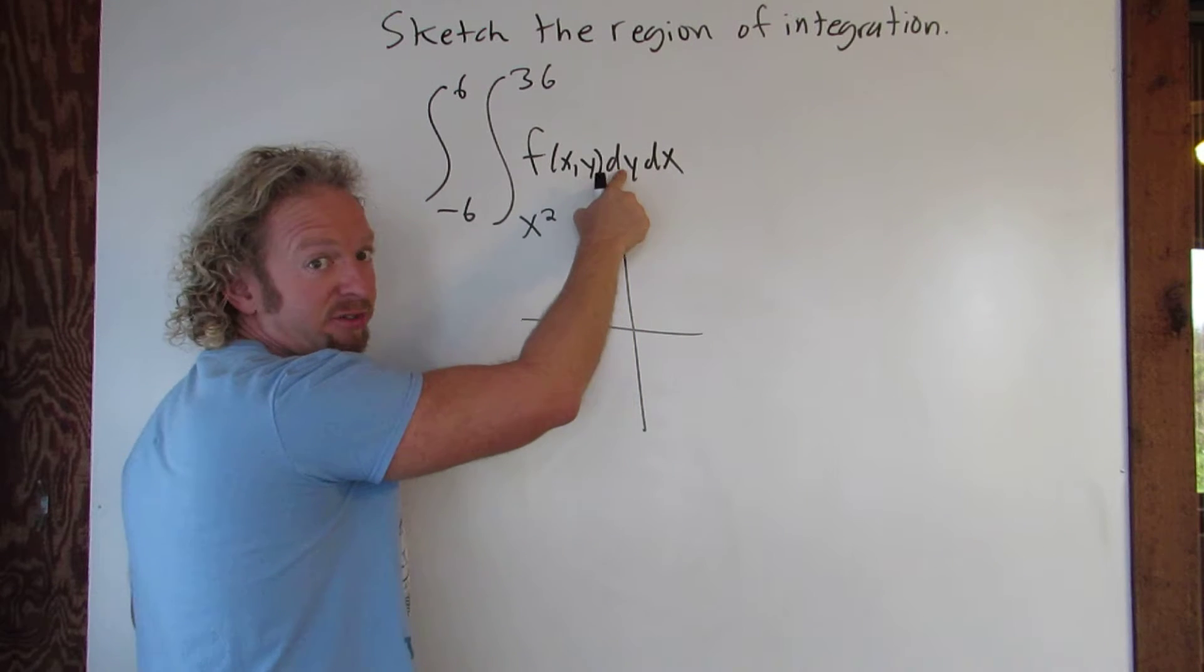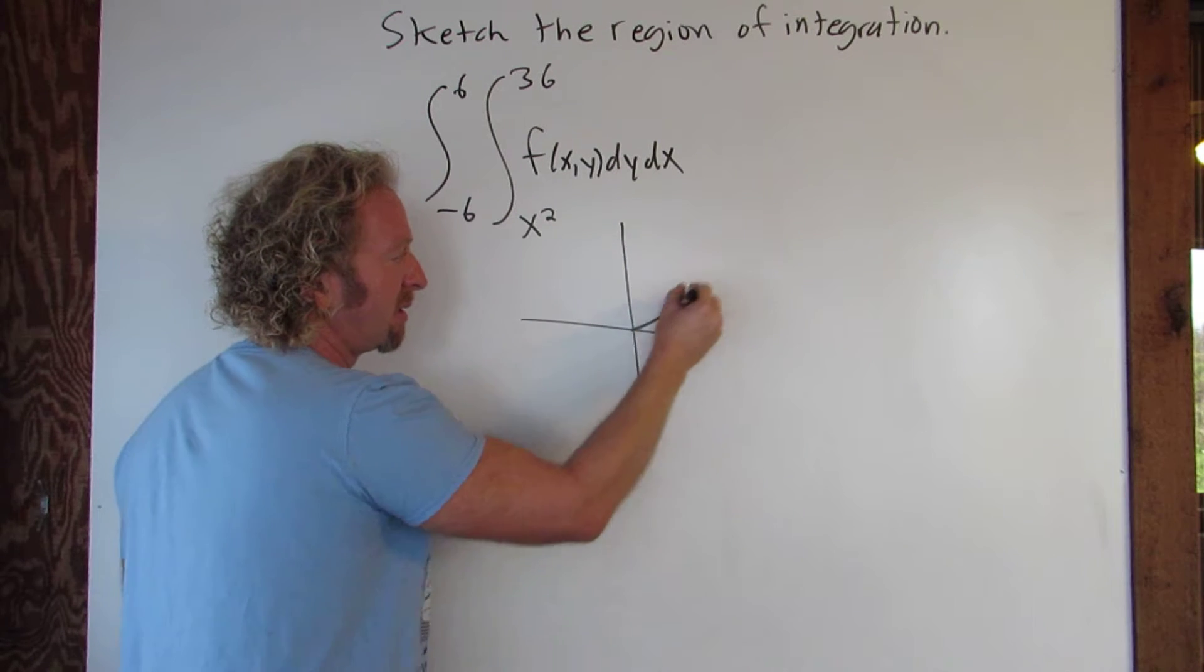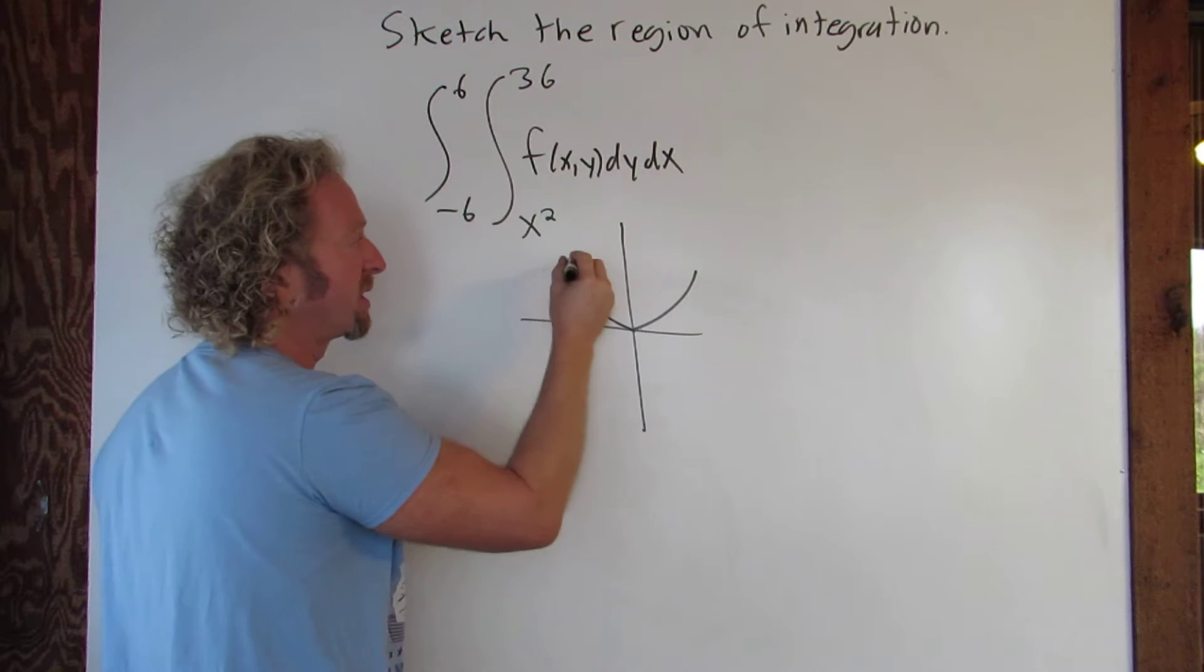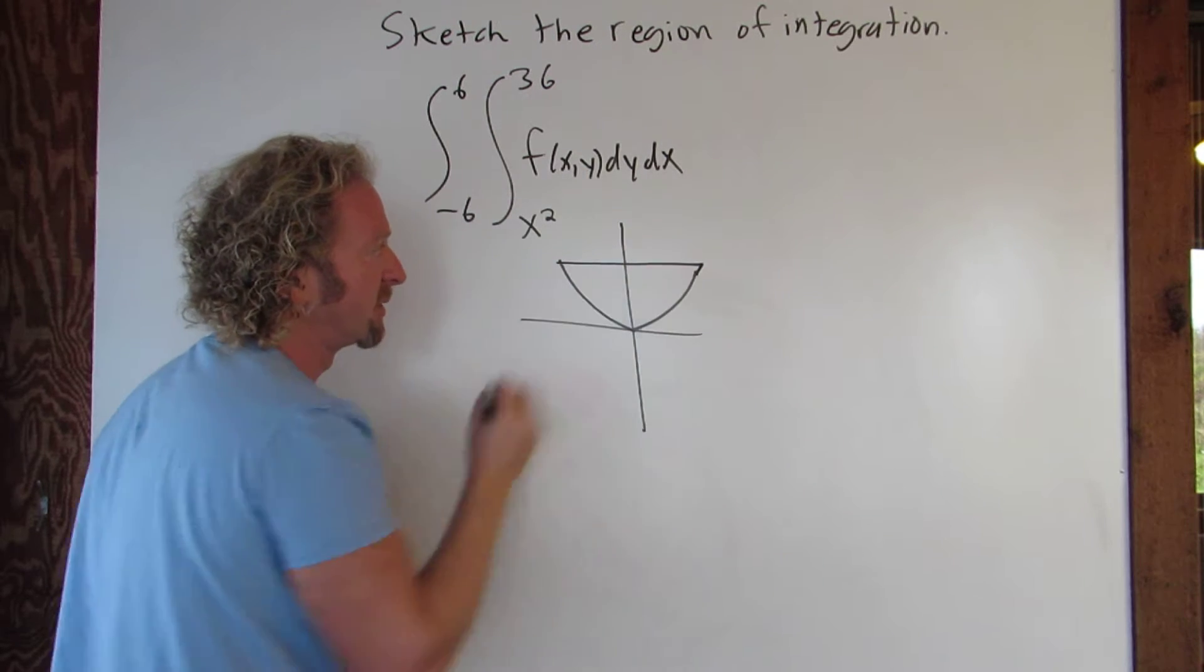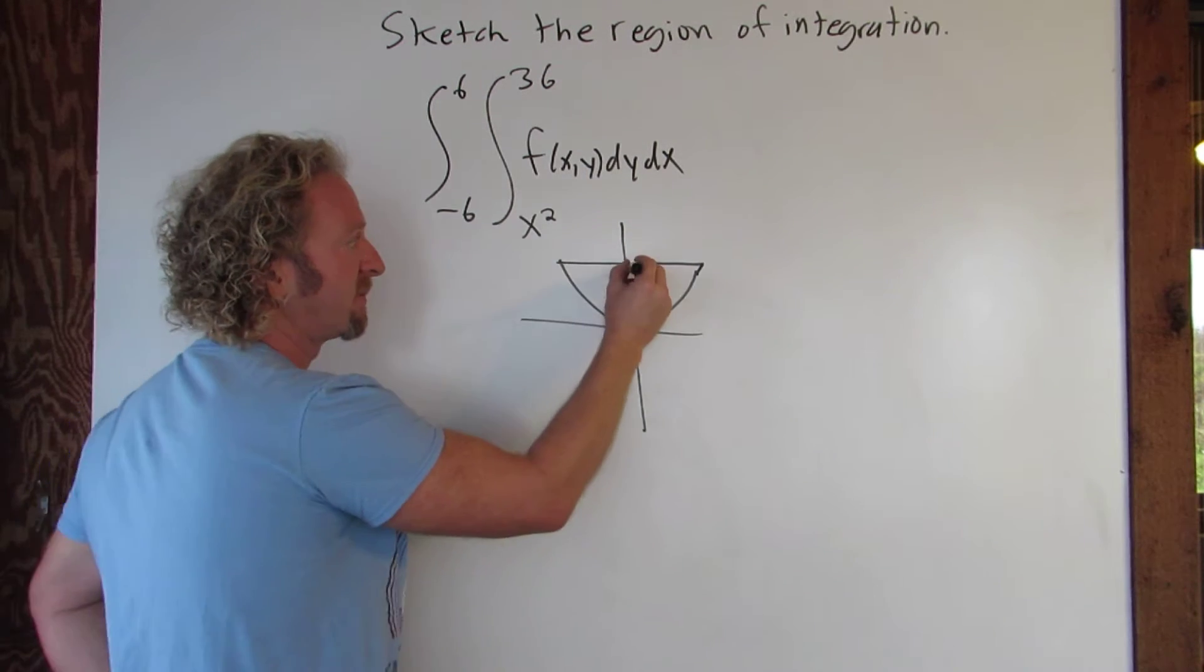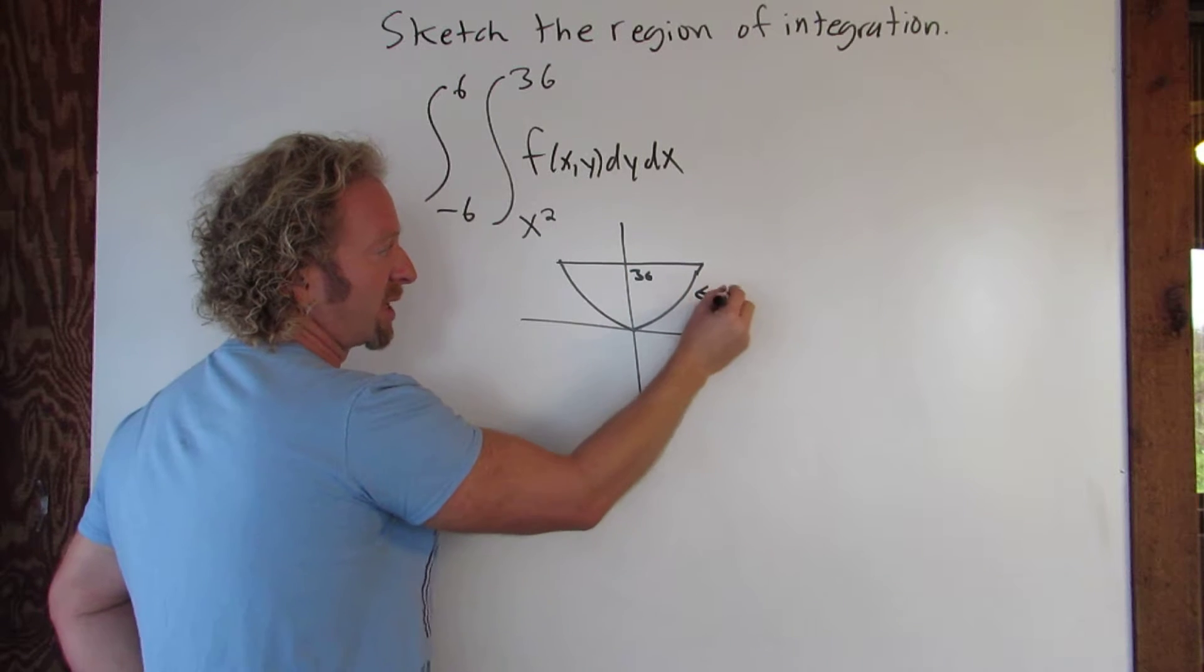So y is a function of x. We're going from y equals x squared, looks like that, to y equals 36 which is a horizontal line. There it is. So that's going to be 36 and that's y equals x squared.